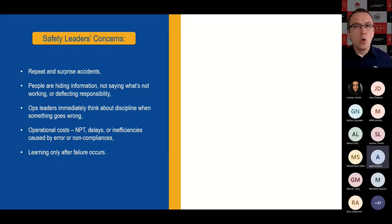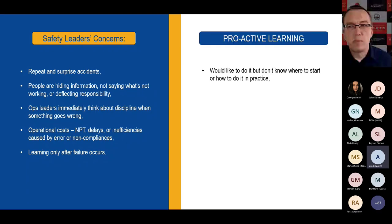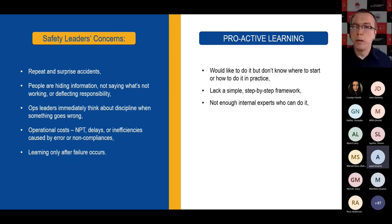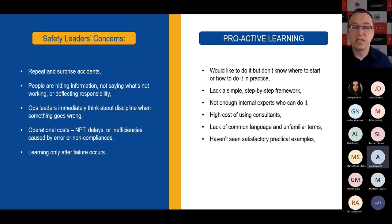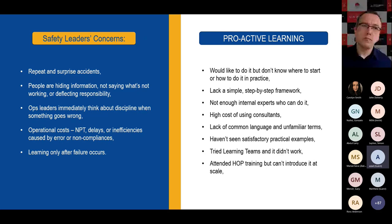As part of that effort, I've talked to dozens, hundreds maybe, of leaders about what concerns them and how proactive learning relates to that. Senior and executive safety leaders are concerned about repeat and surprise accidents, people hiding information and not saying what's not working, operational leaders immediately jumping to discipline, operational costs caused by error or non-compliance, and learning only after failure occurs. Does that resonate with you? When I talk to them about proactive learning, that idea wasn't necessarily new to many of them, but they've expressed a number of frustrations and concerns.